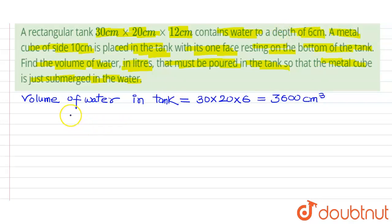Now, we will find the volume of the cube. Volume of cube is equals to 10 raised to 3, that is 1000 centimeter cube.